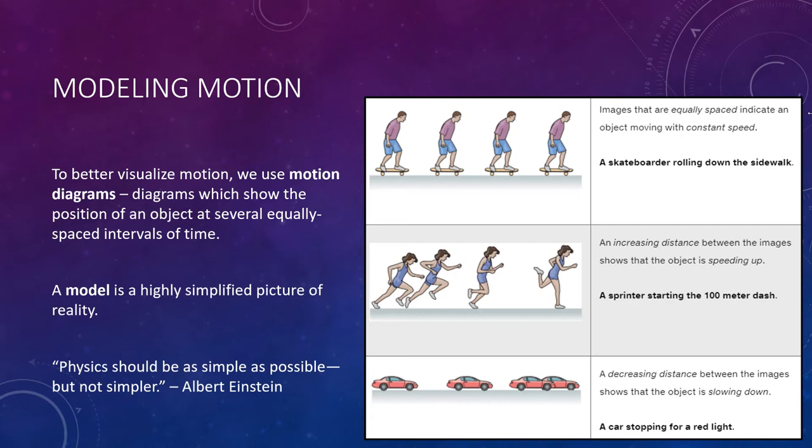To better visualize motion, we introduce something called a motion diagram. That is, a diagram which shows the position of an object at several equally spaced intervals of time. The real world is messy and complicated. Our goal in studying physics is to brush aside many of the real world details in order to discern patterns that occur over time. Stripping away the details to focus on essential features is a process we call modeling. Thus, a model is just a highly simplified picture of reality. Models allow us to make sense of complex situations by providing a framework for thinking about them.